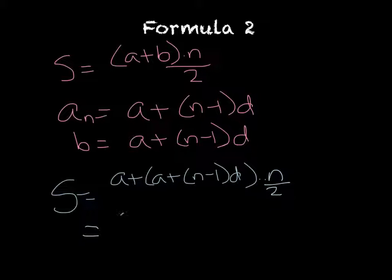which becomes 2a plus n minus 1 times d, all times n over 2.